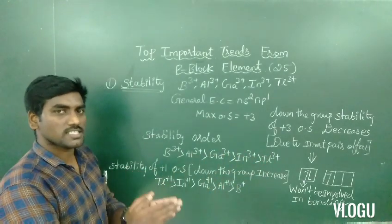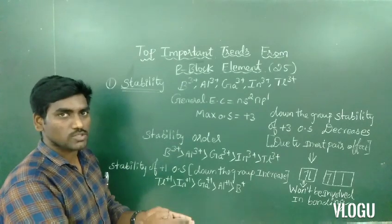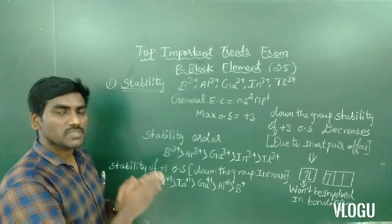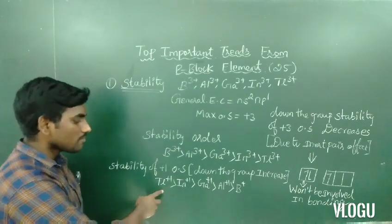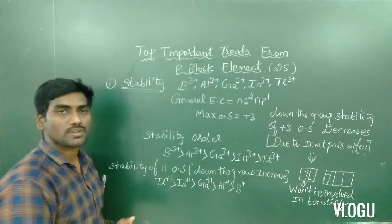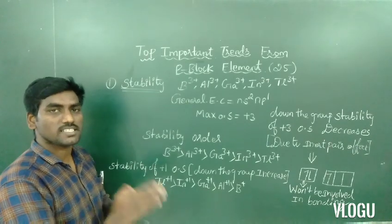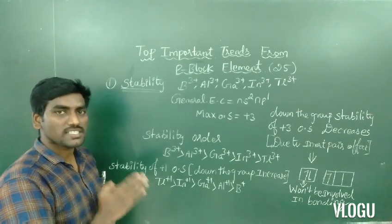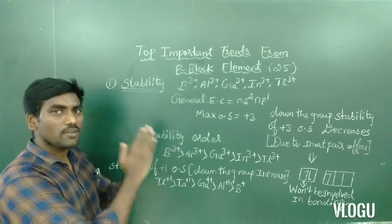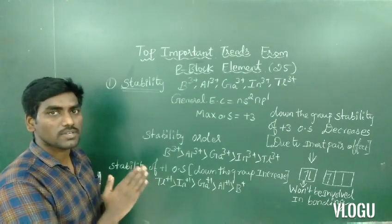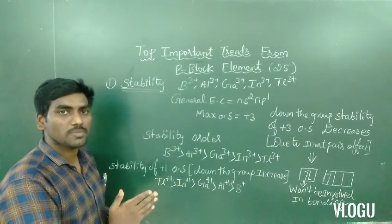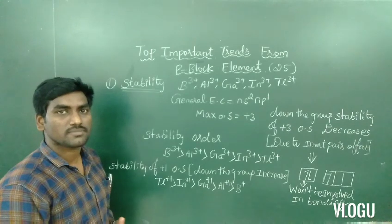Now, plus one oxidation state down the group. Plus three oxidation state, down the group stability decreases. This is the top 25 trend, first trend stability. Plus three oxidation state down the group decreases, plus one oxidation state down the group increases due to inner pair effect. Thank you.